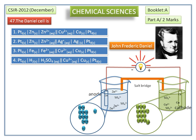Due to this chemical reaction, on the left side container, the concentration of Zn²⁺ ions increases. It can be neutralized by moving these Zn²⁺ ions towards the salt bridge. Similarly, in the right side container, the concentration of sulfate ions increases due to the deposition of copper. It can be minimized by moving the sulfate ions towards the salt bridge.